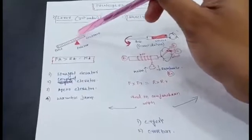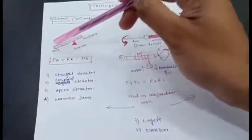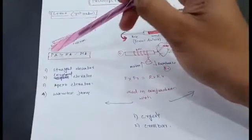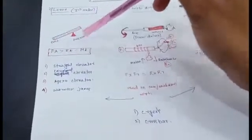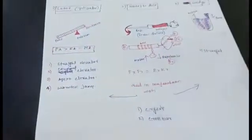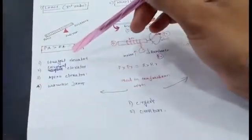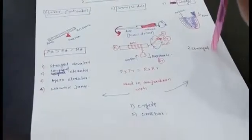If the force arm is greater than the resistant arm, we have mechanical advantage. The fulcrum is near to the resistant arm and we have a longer force arm. If the force arm is greater than the resistant arm, we get mechanical advantage. This is commonly used in the straight elevator.